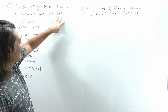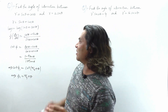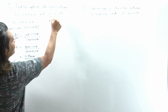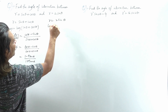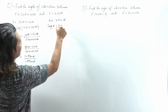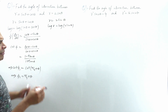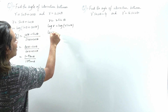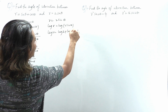Similarly, apply log to the second curve and find the second angle. If we subtract, we get the angle of intersection between the curves. For r = 2sinθ, log r = log(2·sinθ). Applying log principles, log(a·b) = log a + log b: log r = log 2 + log(sinθ).